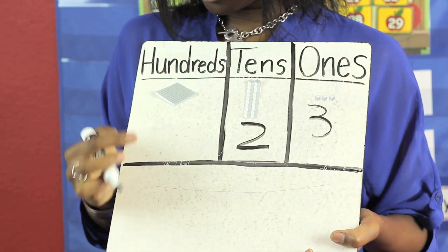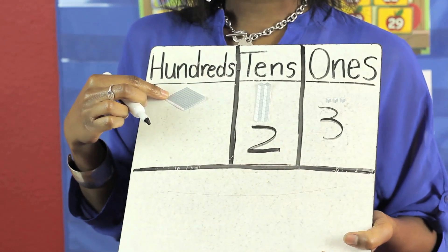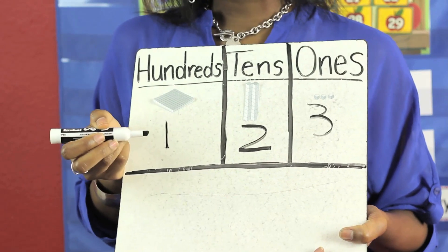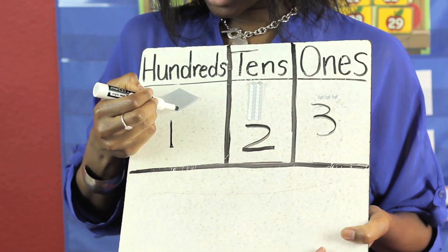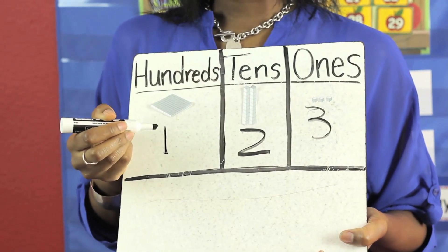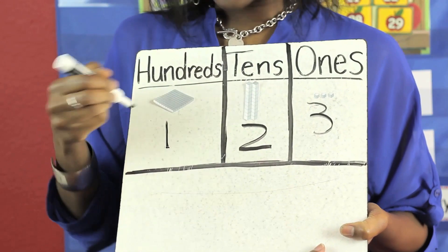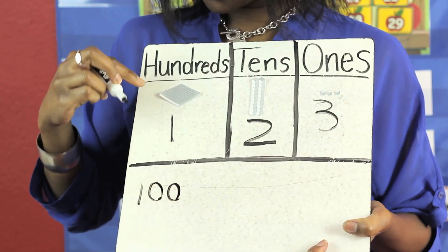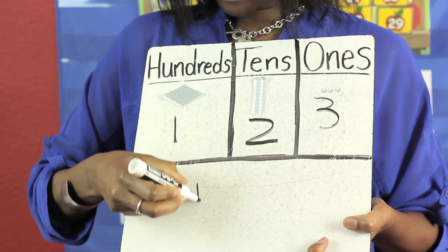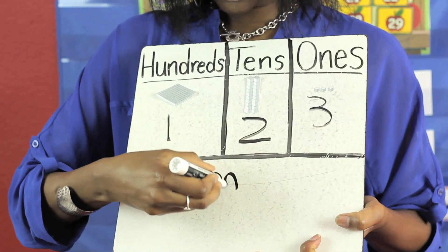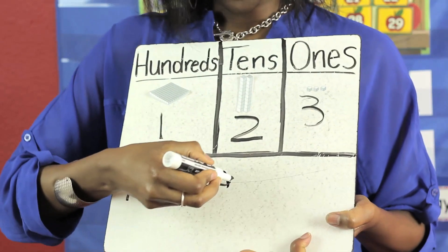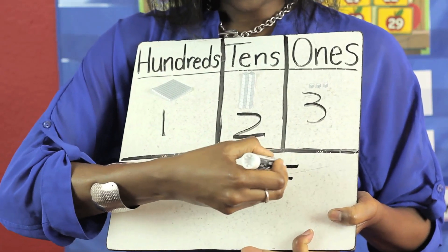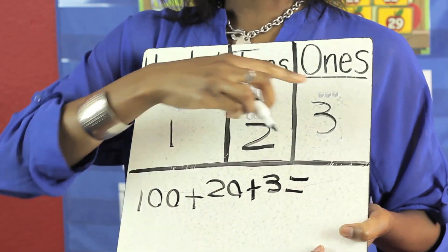Next, you're going to ask the students how many 100 blocks do they see. They will tell you 1, which is 10 tens. Next, you're going to add everything up in expanded form. So 100 plus 20 plus 3 ones equals 123.